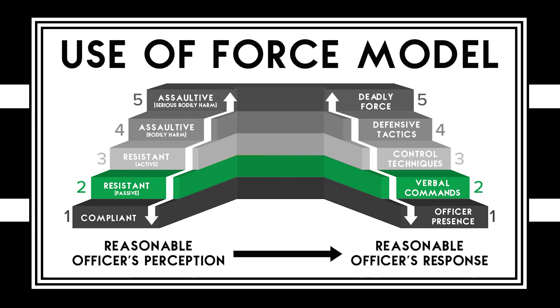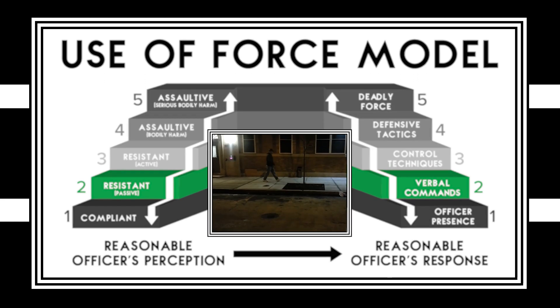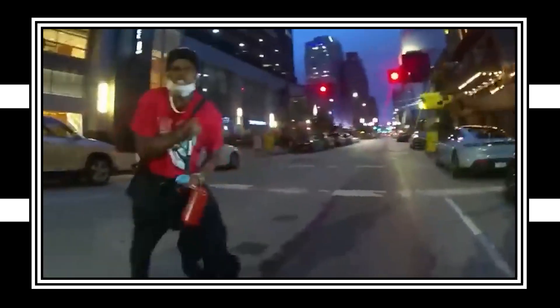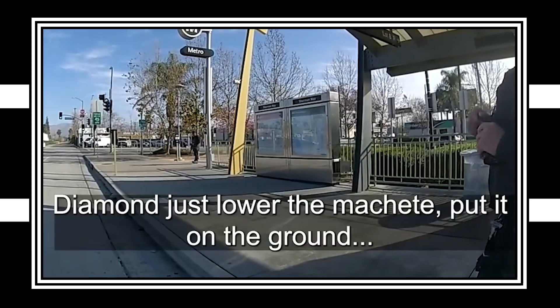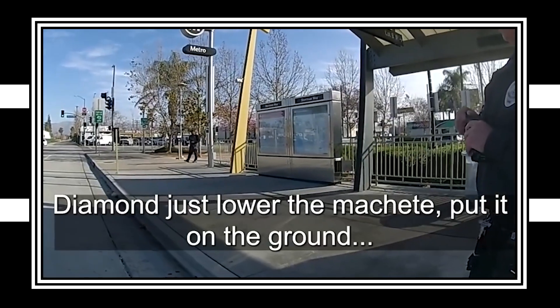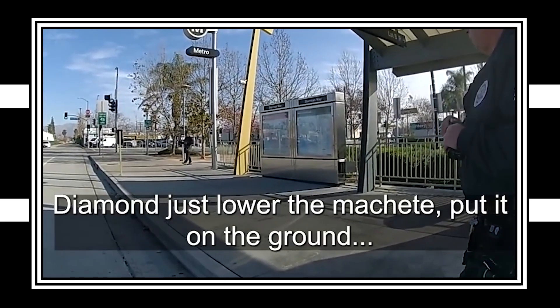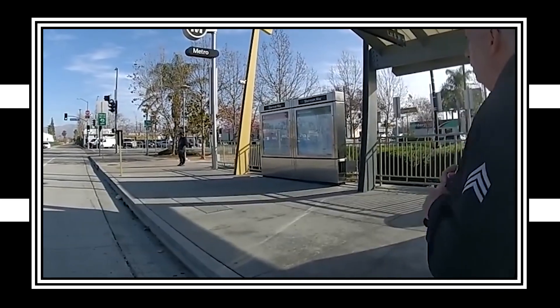Level two is verbal commands. The subject who the officer is in contact with may be pacing back and forth, fist clenched, argumentative, verbally threatening them. At that point in time, the officer is going to use verbal commands to try to get them to cooperate — lay down to the ground, get on your knees, that type of thing.